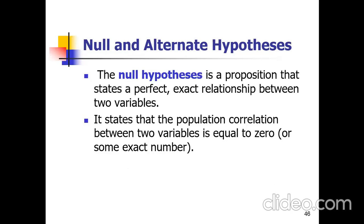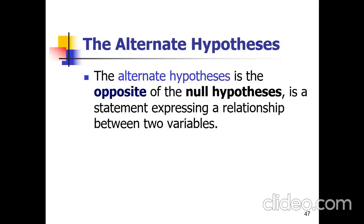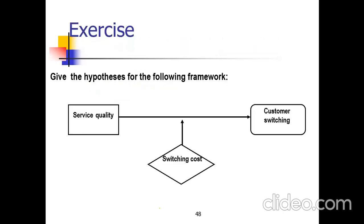The null hypothesis is a proposition that states the exact relationship between two variables — it states that the population correlation between two variables is equal to zero. An alternate hypothesis is the opposite of the null hypothesis; it is a statement expressing a relationship between two variables.